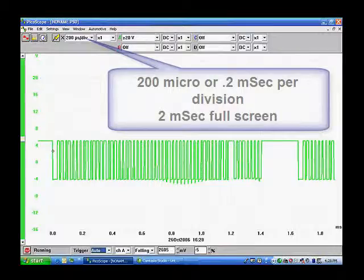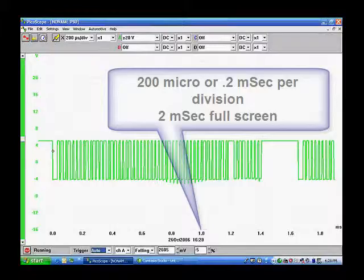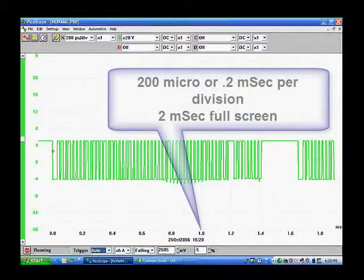Now we're going to set our speed to 200 microseconds or 0.2 milliseconds. That gives us 2 milliseconds full screen. And the voltage scale is going to be in the 20 volt scale.